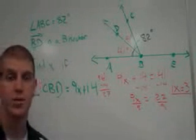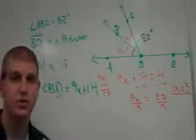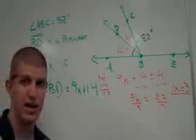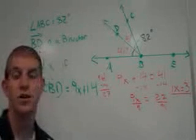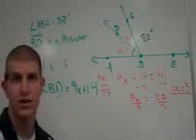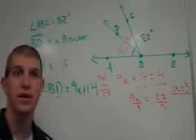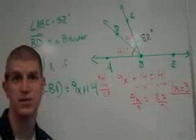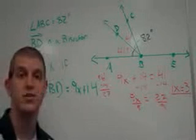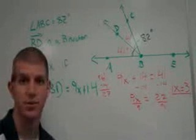We could talk about a linear pair, which is two adjacent angles that add up to 180. And we can talk about vertical angles. Angles created by the intersection of lines or segments where their angle measures are congruent to each other.